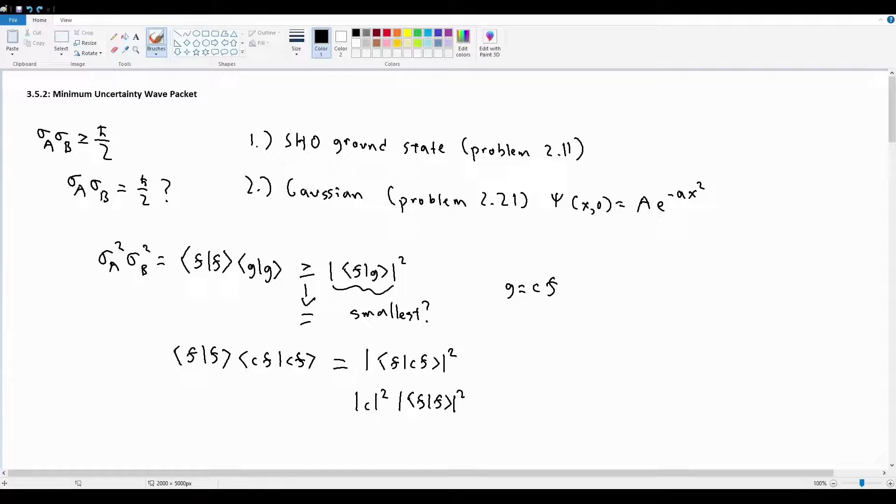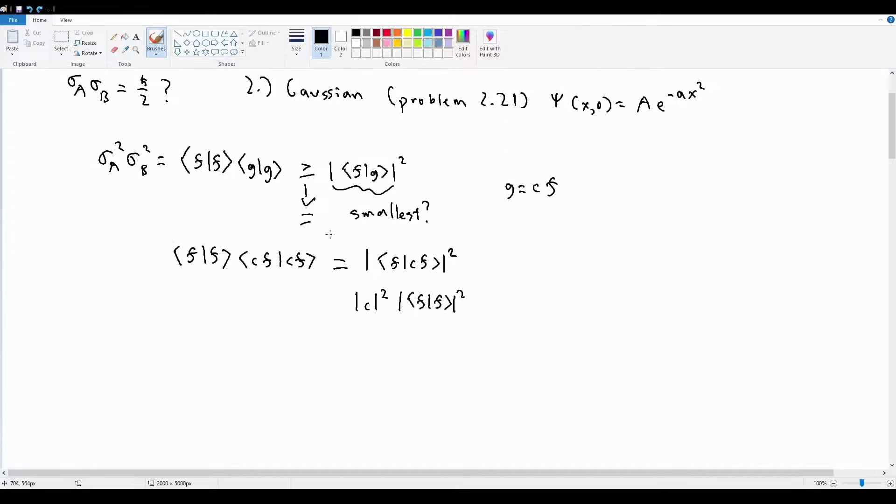Because remember that when we were proving 3.5.1, one of the things we did was we represented complex values as magnitude z squared is equal to the real component magnitude squared plus the imaginary component magnitude squared. And that this was going to be always greater than or equal to solely the imaginary component. So we did this in 3.5.1.